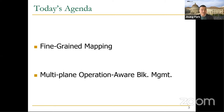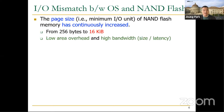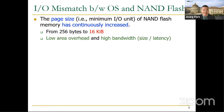Let's dive into the first topic: fine-grained mapping. I'm going to first provide a brief background necessary to understand this topic. As we all know now, a page is the minimum I/O unit of NAND flash memory. In early generations of NAND flash memory, the page size was 256 bytes, but manufacturers have continuously increased the page size to 16 kilobytes over the years, except in some latency-optimized NAND flash memory.